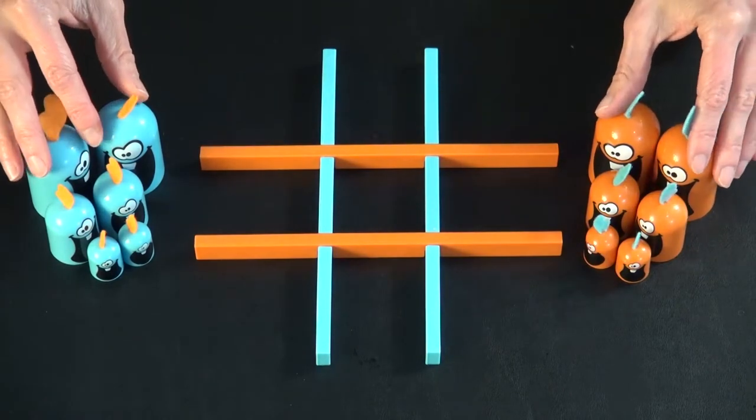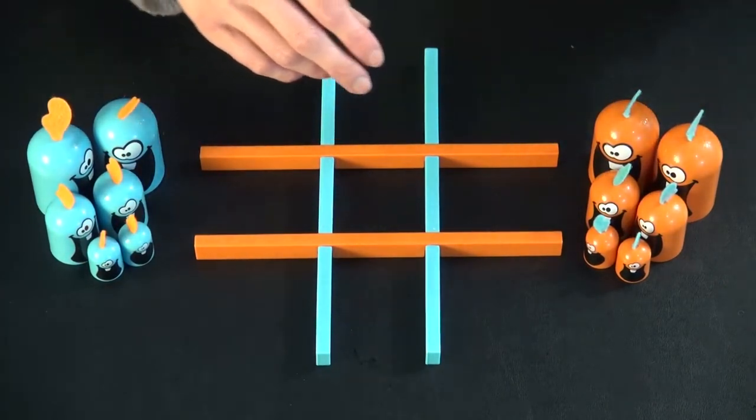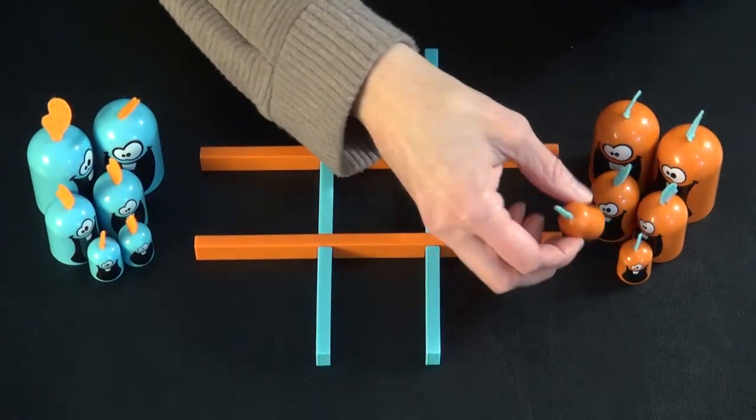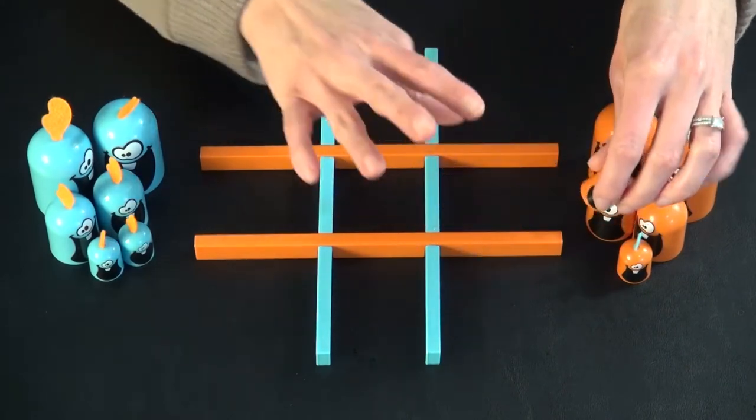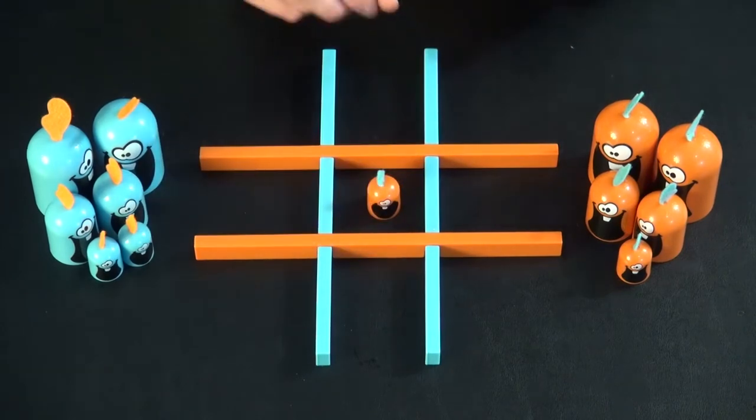So each player starts with six of these pieces, two of each size. Generally, you pick the younger player to go first, and they take usually one of your smaller pieces to start as a better choice. They take their piece and let's say they just stick it right in the middle.